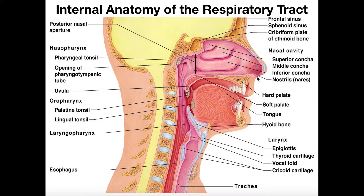Right here we have the external nostril, or the external nare. Generally when we refer to nostrils, we usually just think of those two little holes in our nose. But actually, there is a set of internal nostrils, which we'll discuss in a couple of minutes. This external nostril or external nare would be the entrance point of air when you inhale through your nose.